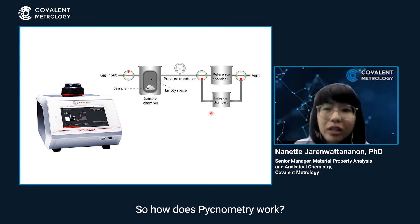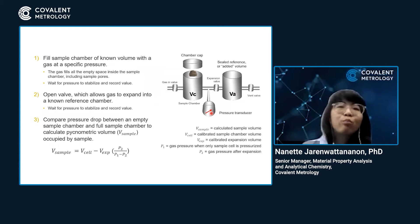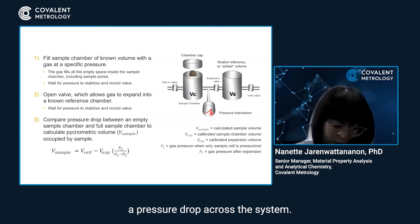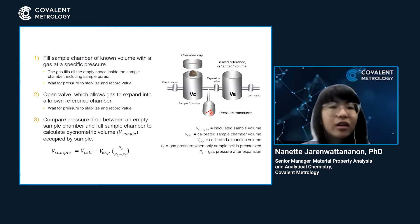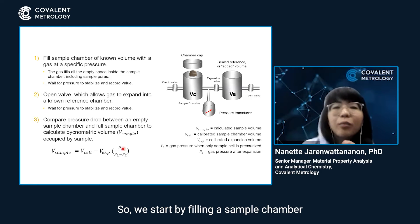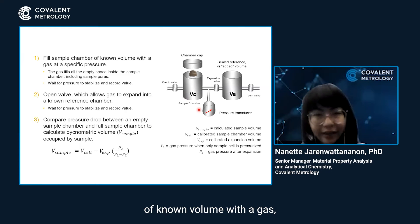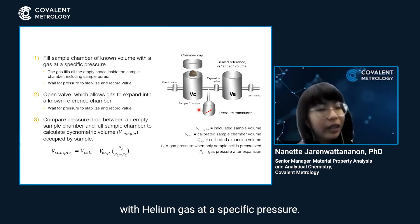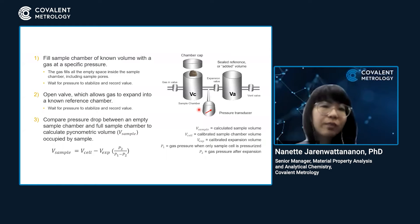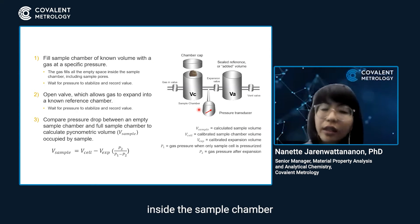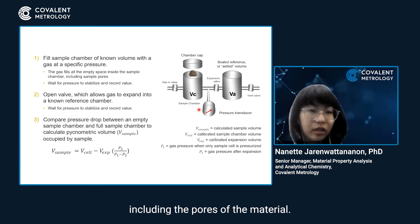How does pycnometry work? Pycnometry works by measuring a pressure drop across the system. We start by filling a sample chamber of known volume with helium gas at a specific pressure. The helium is going to fill all the empty space inside the sample chamber, including the pores of the material.